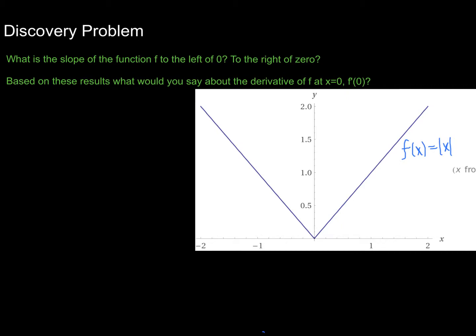Let's take this one step at a time. Looking at the first question: what is the slope of the function to the left of zero? I'm going to split my function down the middle and take a look at everything to the left. Since we have a straight line here, we can just make a quick slope triangle and look at the change in y over the change in x. The change in y goes from 1 down to 0, that's negative 1, and from x = -1 to 0 is a change of positive 1. So the slope to the left of 0 is negative 1.